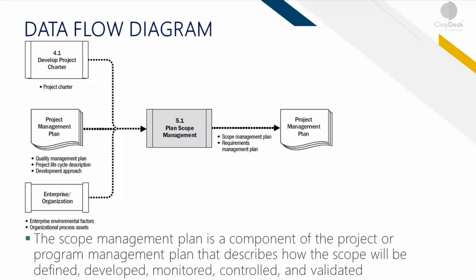Here's a quick data flow diagram. Once again, you have the project charter coming from the previous chapter, which becomes part of the project plan for the organization. Scope management is created and you end up with the scope management plan, which details the requirements management plan — a component of the project or program management that describes how the scope will be defined, monitored, developed, controlled, or validated.